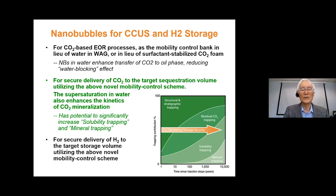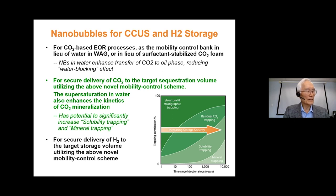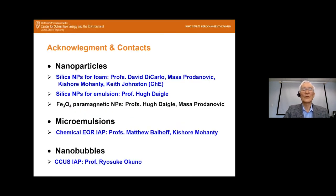Nanobubbles also have potential for secure delivery of hydrogen to target storage volumes utilizing novel mobility control schemes, though I won't discuss the details here as Dr. Okuno will be publishing results soon. That's the brief description of the green use of nanodispersions for the upstream oil industry. All the work has been carried out by researchers, graduate students, and postdocs.